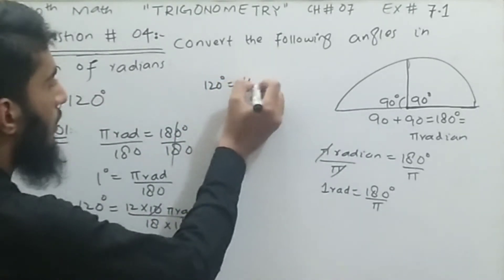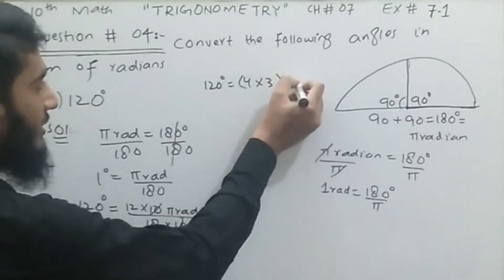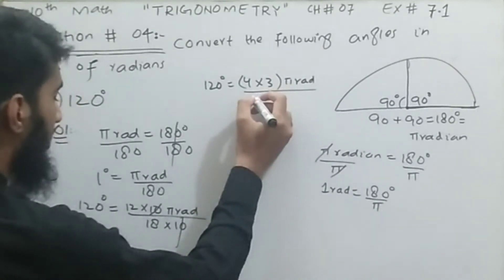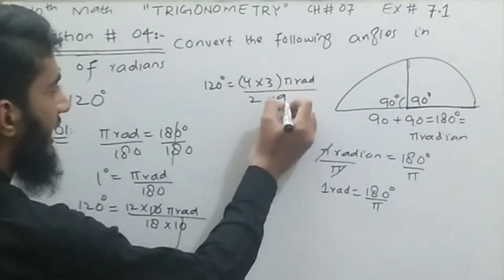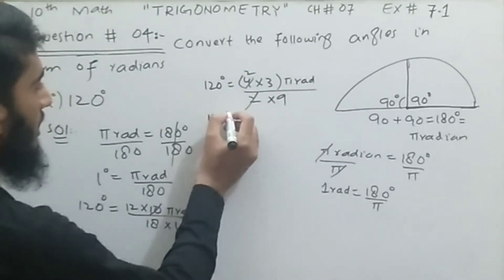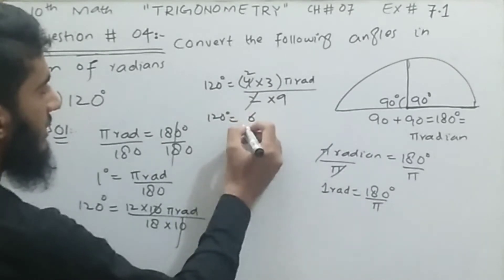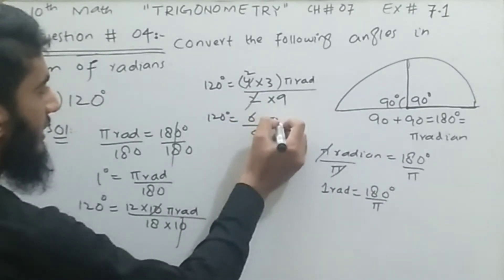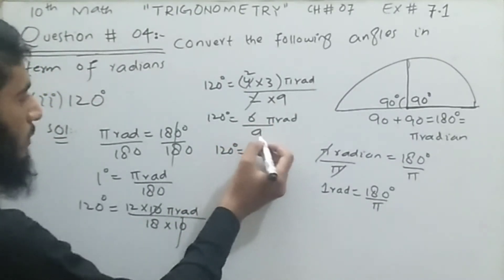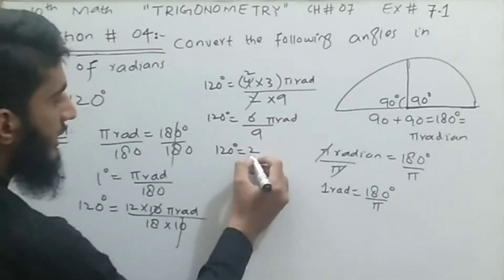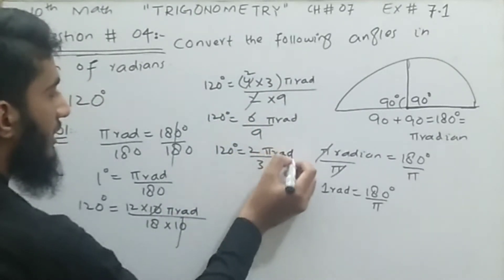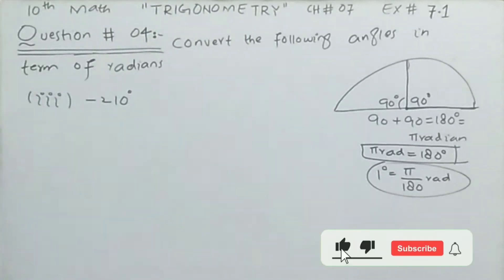Now 12 can be written as 4 × 3 and 18 as 2 × 9. So 4 cancels with 2, leaving 2, and we have 2 × 3 = 6 divided by 9. Further simplifying by dividing 6 and 9 by 3 gives us 2 divided by 3. So 120 degrees equals 2π/3 radian. This is the required result.